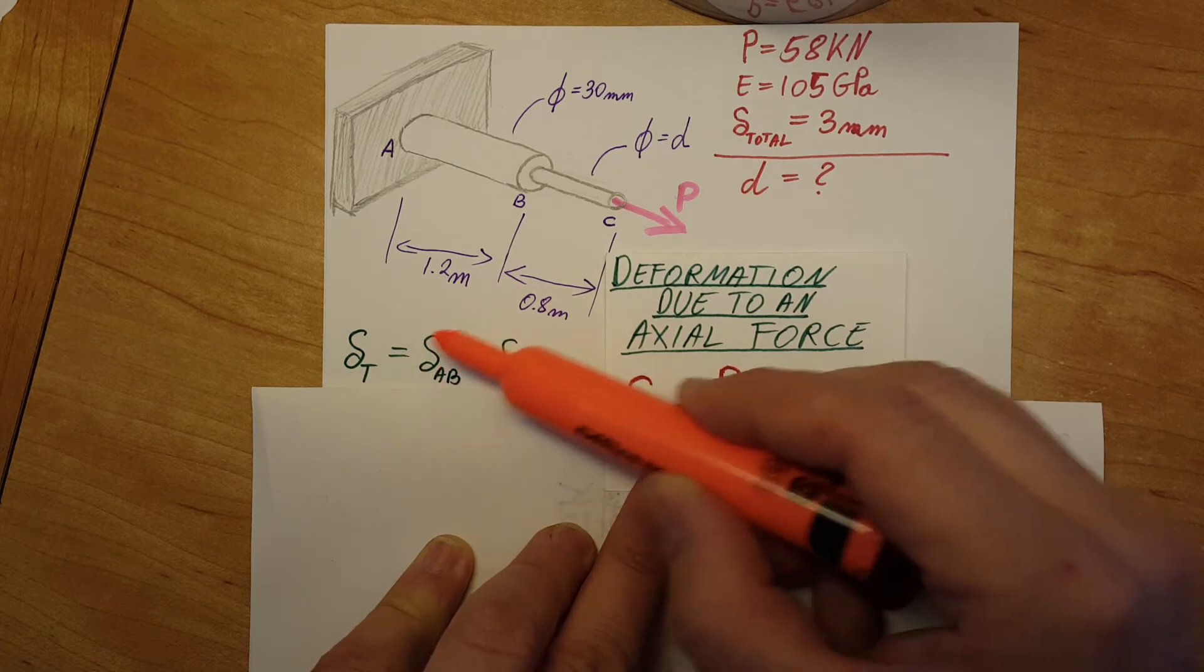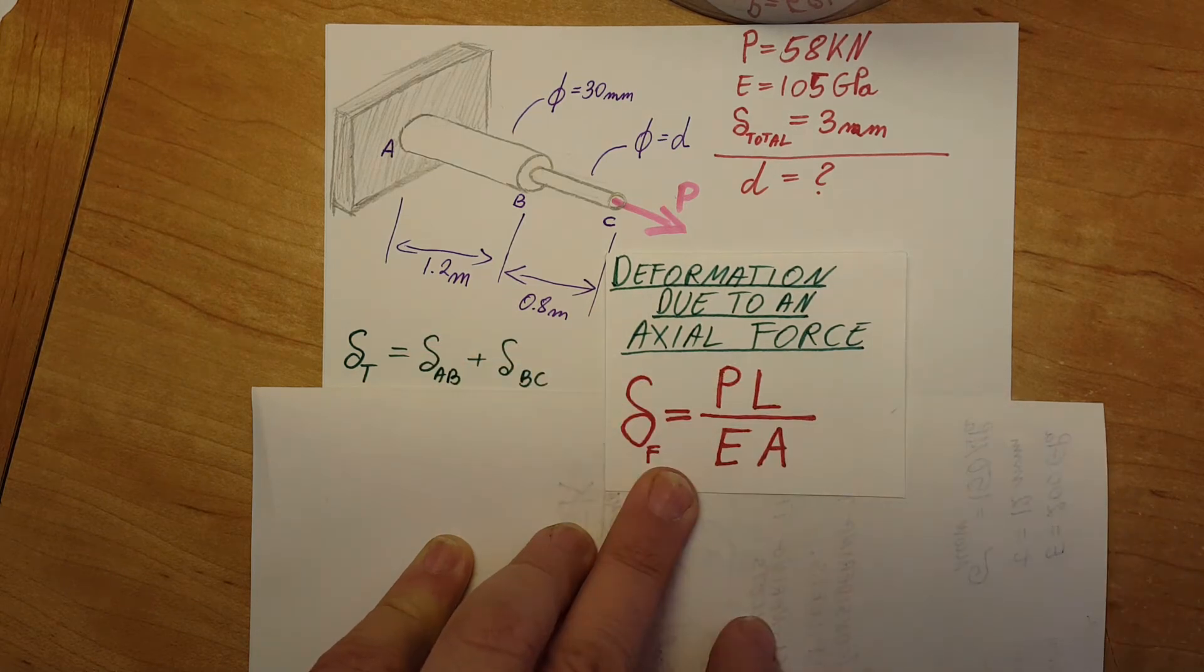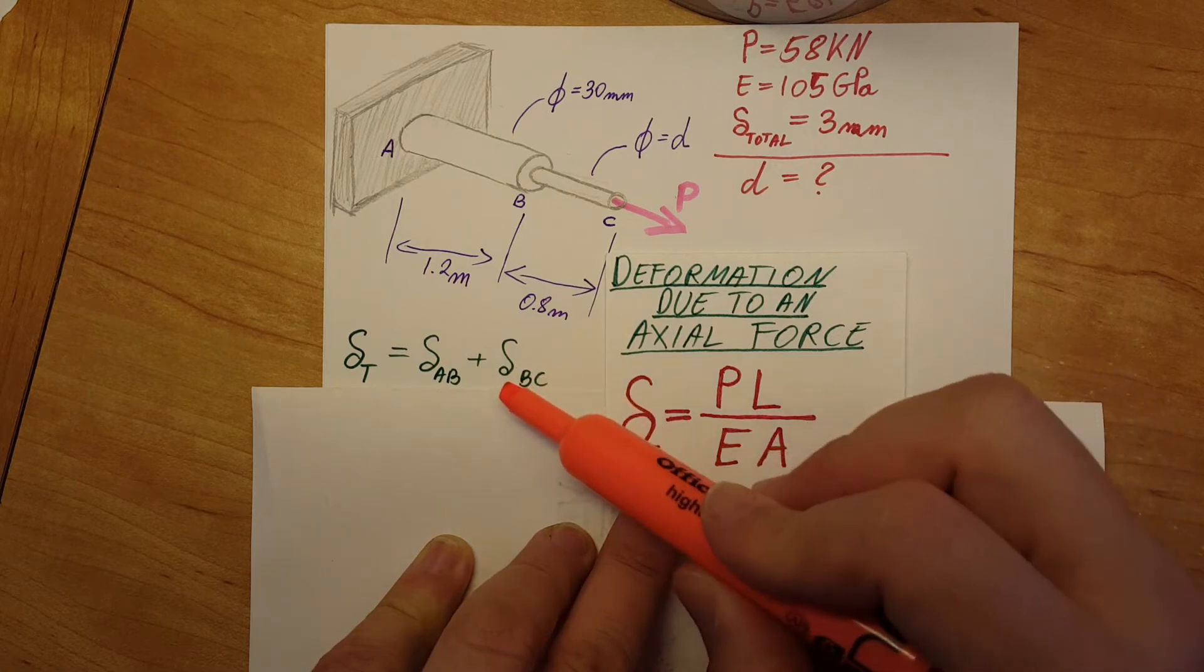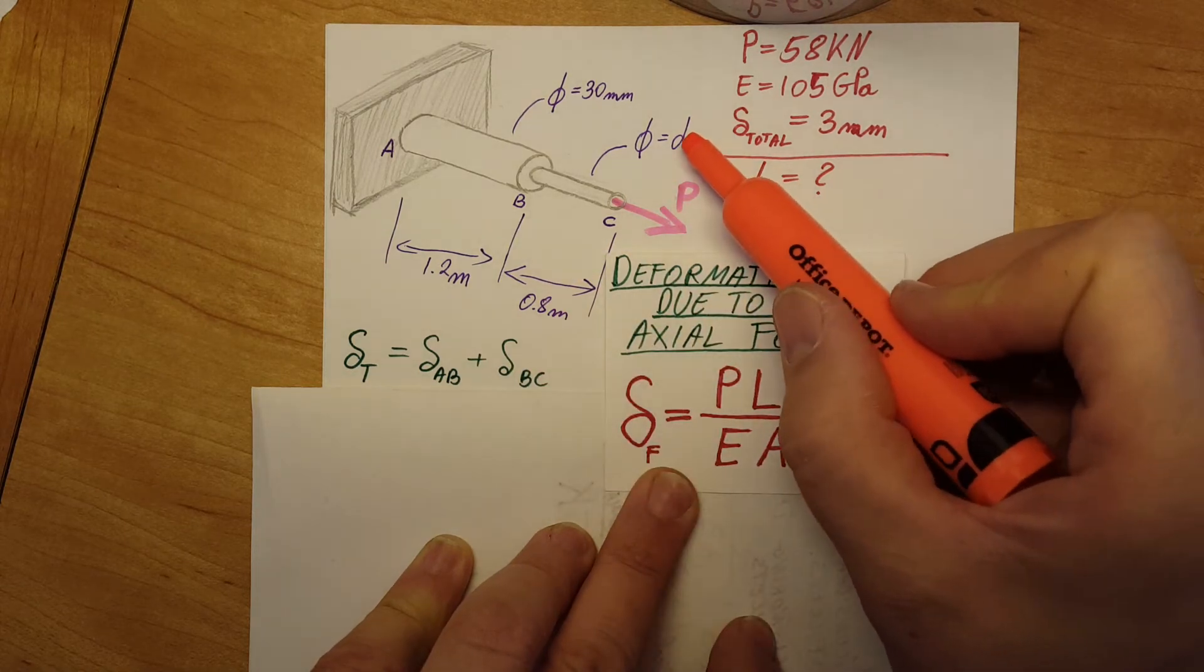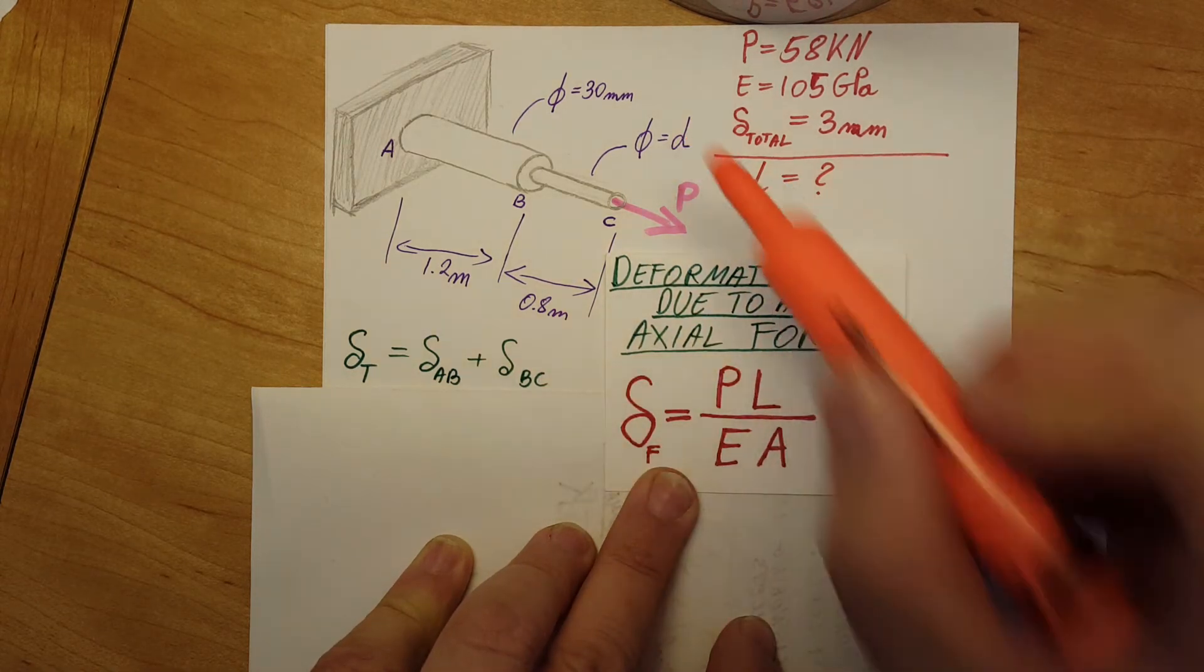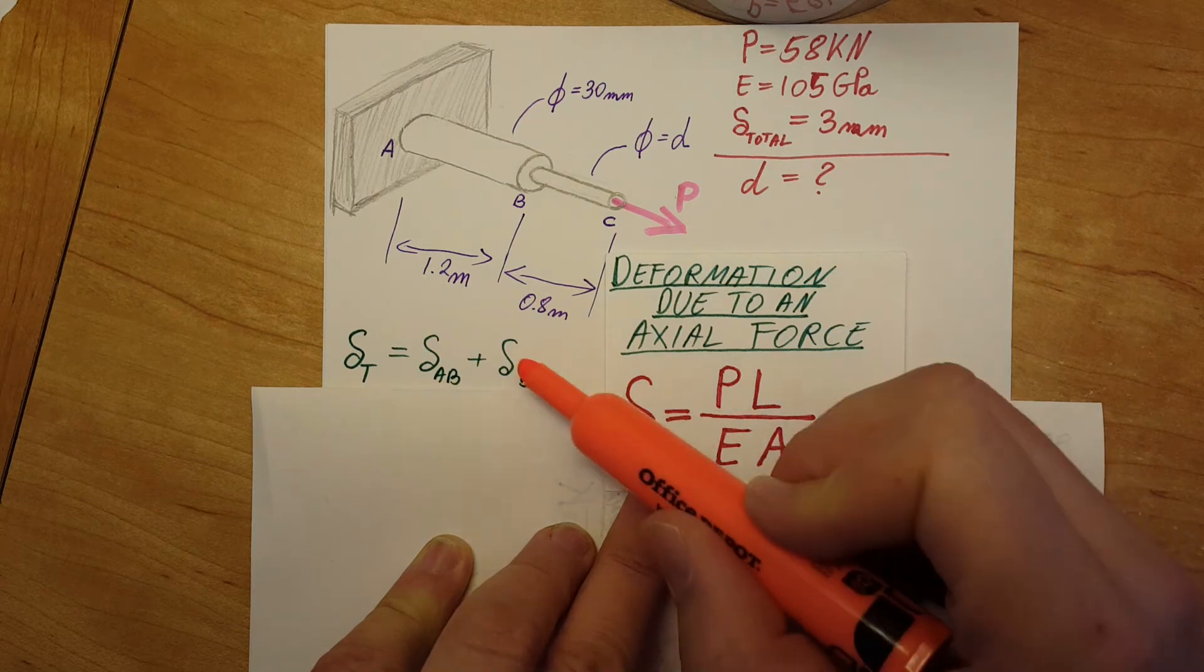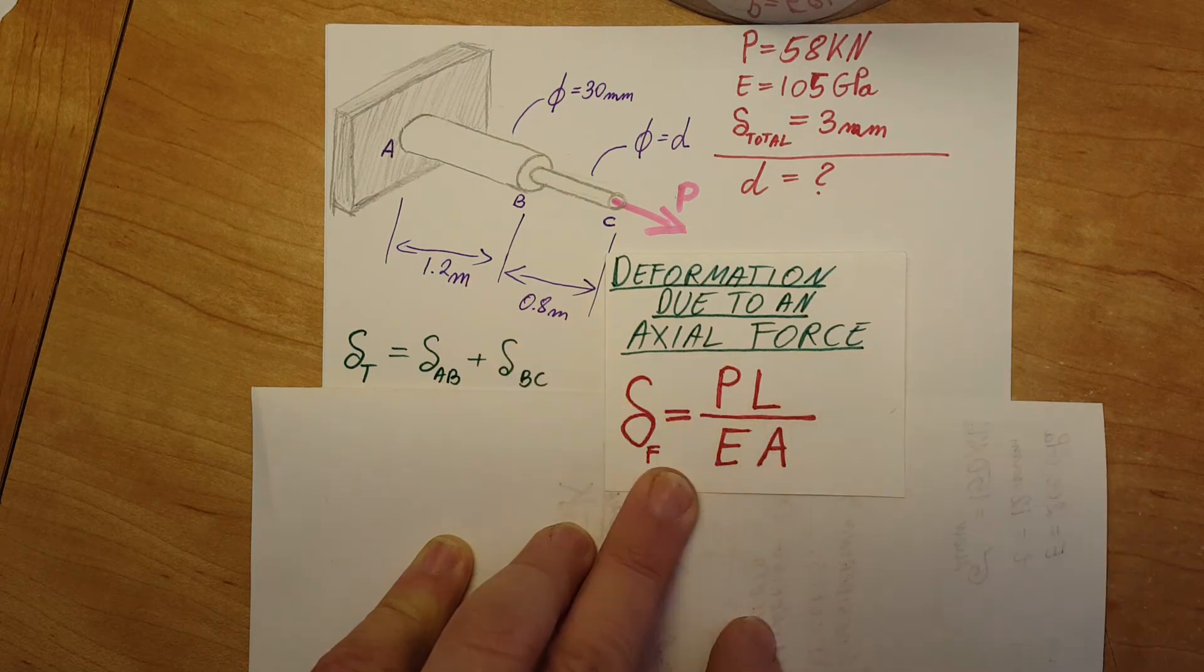The deformation in BC, that's a different story. We're gonna have our unknown, the d, included in our area. So this way, this is where our variable is gonna be.